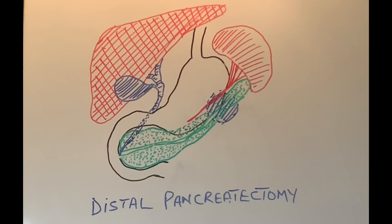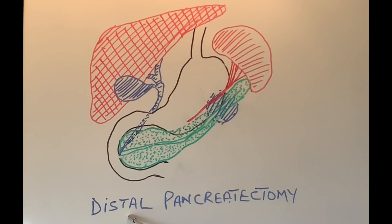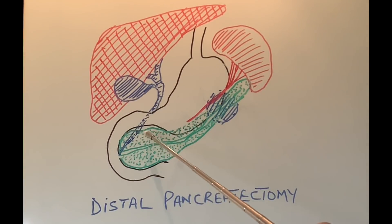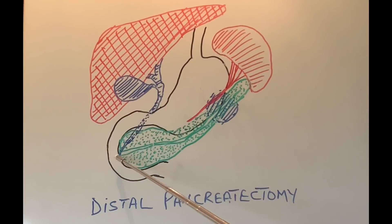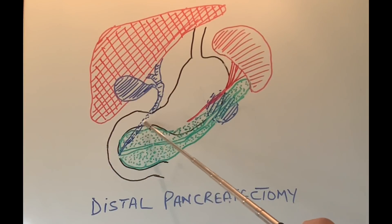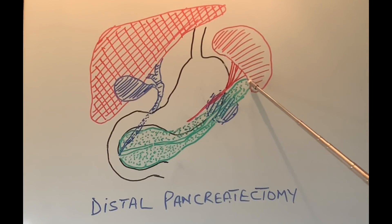The next procedure is called distal pancreatectomy. To understand what distal means: proximal means closer to the attachment site, and distal means away from the center or the attachment site. In the case of the pancreas, the head is attached to the duodenum with the bile duct coming through it and the pancreatic duct opening into it, so this is the proximal part of the pancreas. Anything going further away from it is called the distal part of the pancreas.